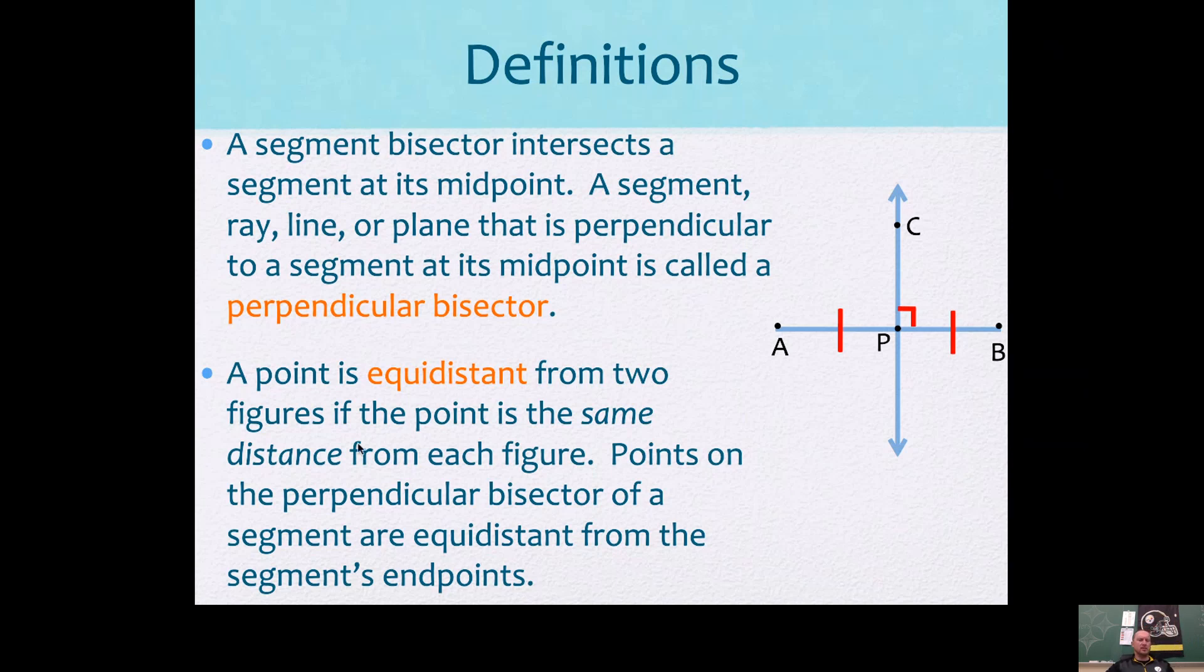A point is equidistant from two figures if the point is the same distance from each figure. Points on the perpendicular bisector of a segment are equidistant from the segment's endpoints. So here's what that means. You can pick any point you want from this perpendicular bisector, and it would be the same distance to that endpoint, and it would be from that endpoint.